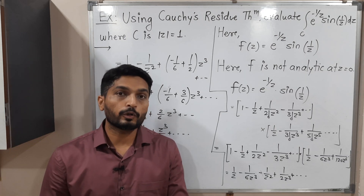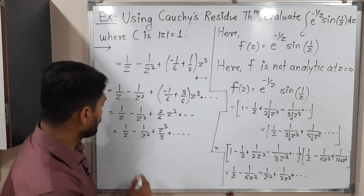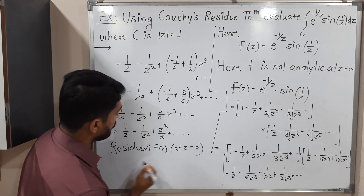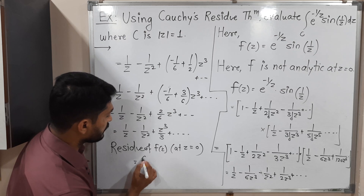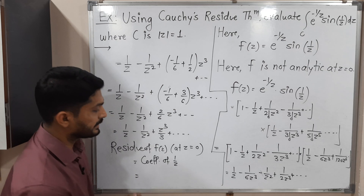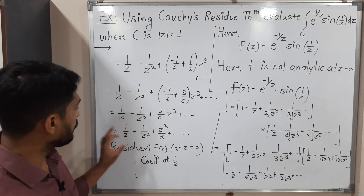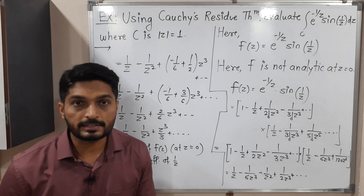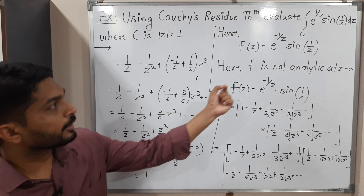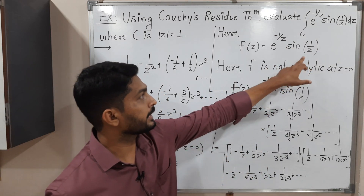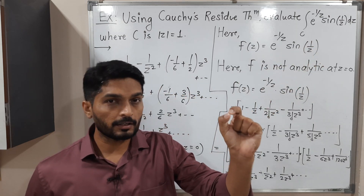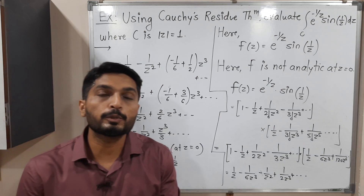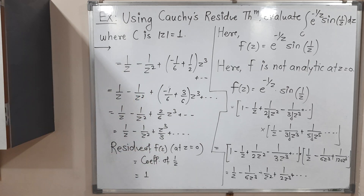We have obtained the Laurent series expansion. By definition, the residue of f(z) at z = 0 is the coefficient of 1/z in the Laurent series. Looking at the series, the coefficient of 1/z is 1. Therefore, the residue of f(z) at z = 0 is 1. We had only one singular point, z = 0, which lies inside the circle, so this is the only residue we need.